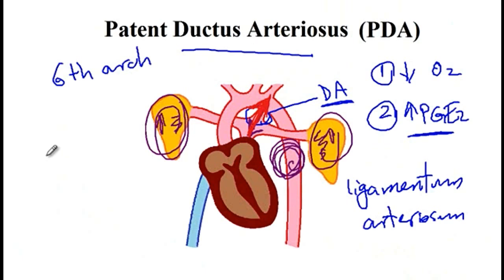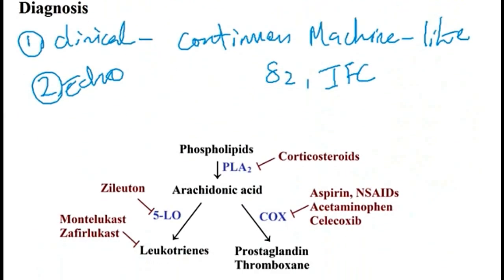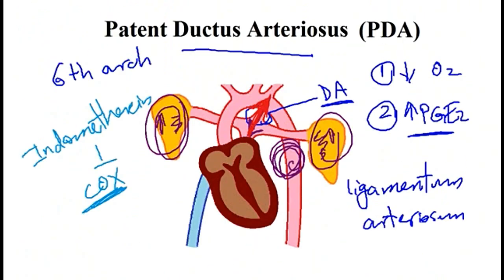Medications that can be used to treat patent ductus arteriosus include indomethacin, which is an NSAID that inhibits the COX enzyme. The COX enzyme is required for the production of prostaglandin — here is the pathway through which prostaglandin is produced from phospholipids. By inhibiting COX, indomethacin reduces prostaglandin production, and since prostaglandin is one factor that helps keep the ductus arteriosus patent, this helps close it.